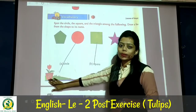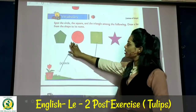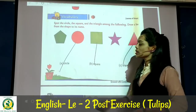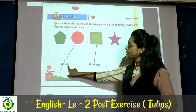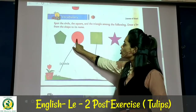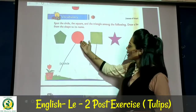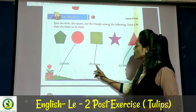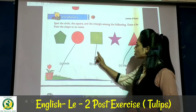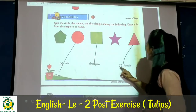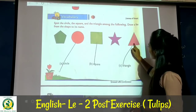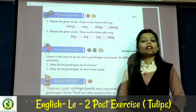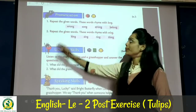Match each shape to its correct name. Circle — C-I-R-C-L-E — find the circle and match it. Then square — S-Q-U-A-R-E — match it. And last, triangle — match the triangle shape. Next topic is pronunciation.